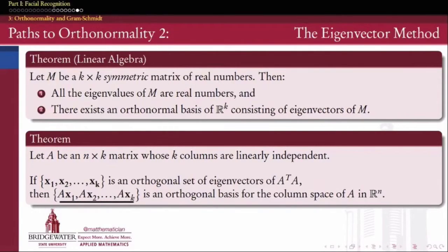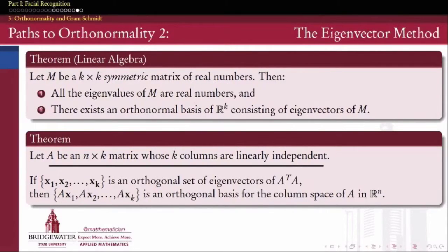That's pretty handy. If we know how to find the eigenvectors of A^T A and choose them to be orthogonal, then multiplying them by A gives us an orthogonal basis for the column space of A — which began as just the span of generic linearly independent columns. We'll see how this works in practice in a minute, but first let's provide a proof of this theorem.